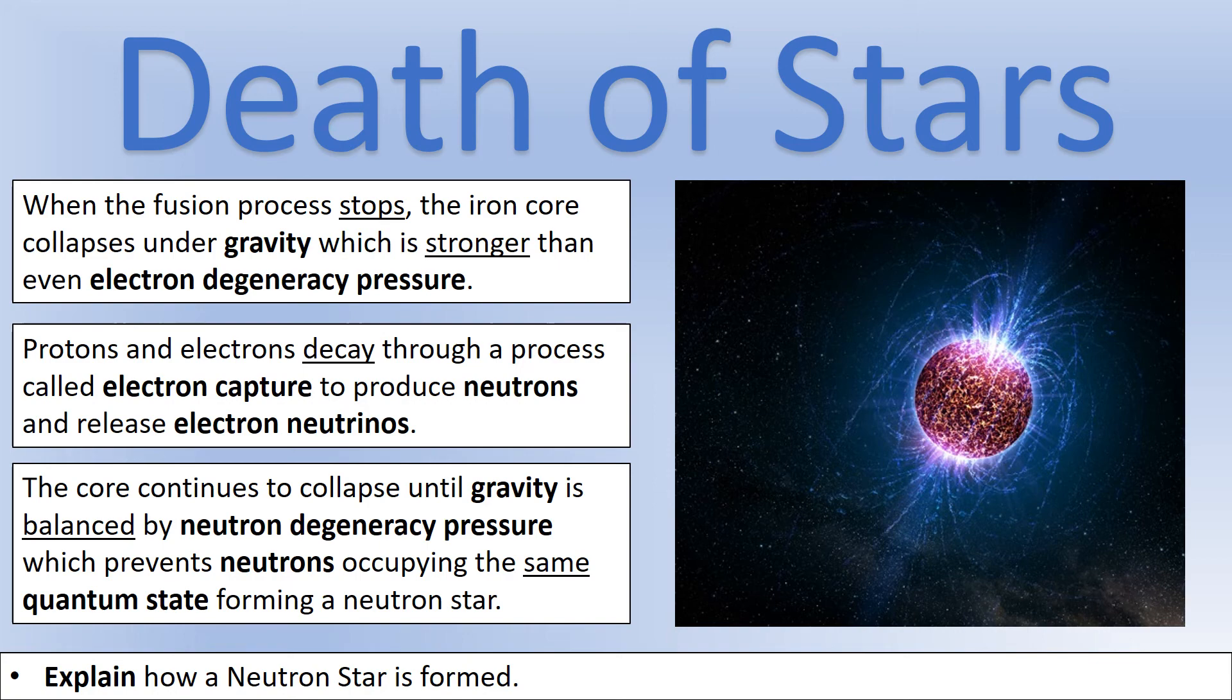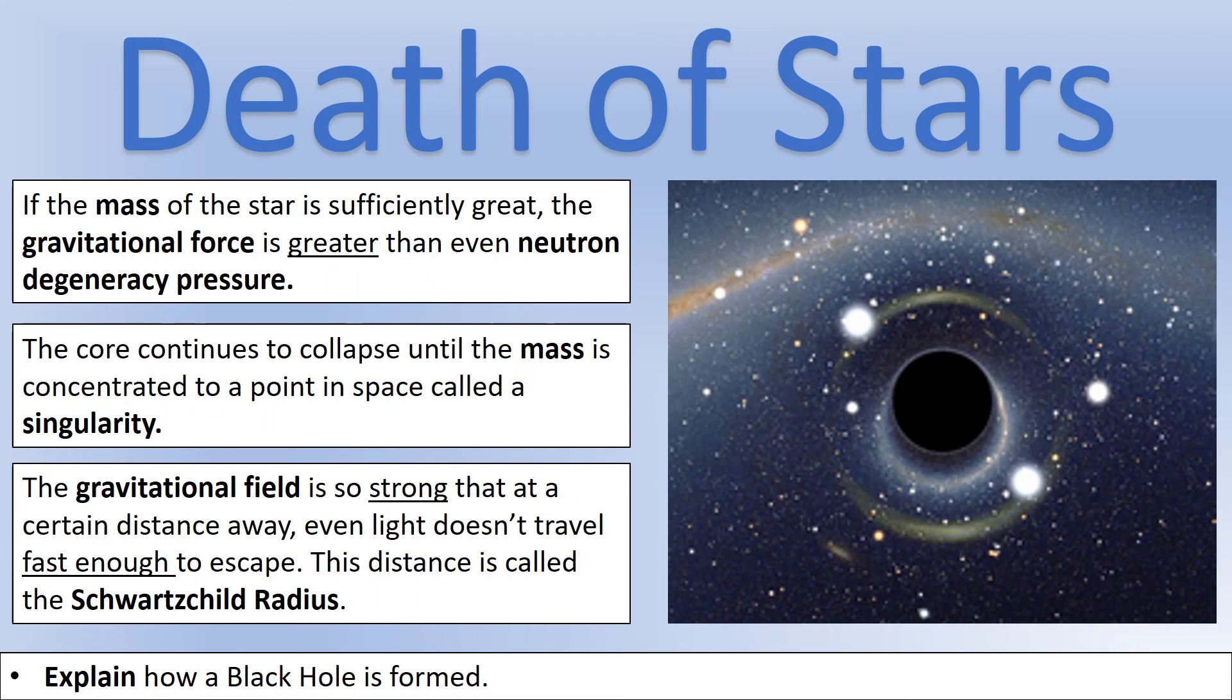And you might guess where this is going. If it's even bigger, we still have a gravitational force greater than neutron degeneracy pressure. So the entire system collapses onto itself. So it's concentrated into nearly a single point in space of near infinite density. And we call that a singularity.